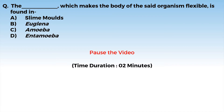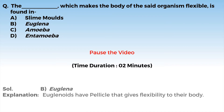So let's see, the correct answer is option B, euglena. Class, we have learned that euglenoids have a pellicle present, which gives the body flexibility.